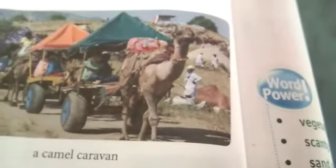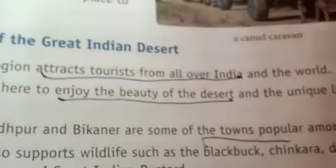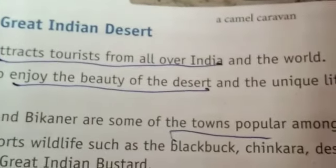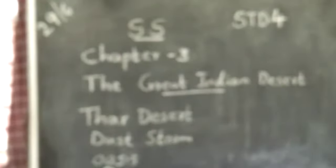What are the importance of the Great Indian Desert? It attracts tourists from all over India who come to enjoy the beauty of the desert. The important towns here are Jaisalmer, Jodhpur, and Bikaner.